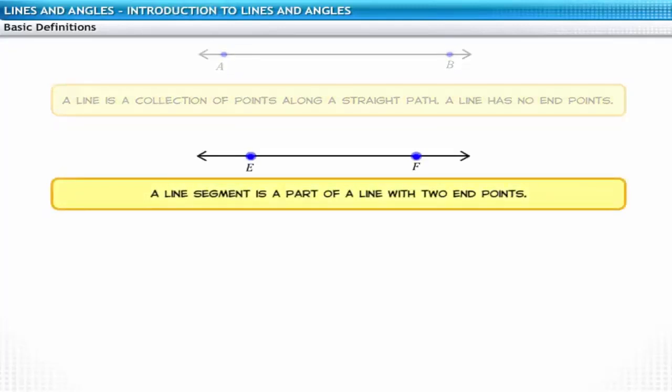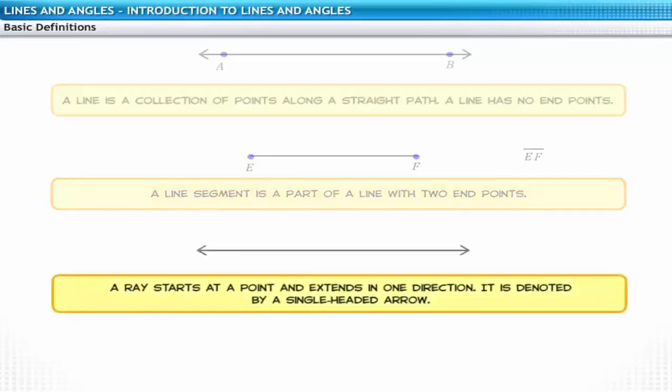A part of a line that has two endpoints is called a line segment. Let's name this line segment EF. It is denoted by a bar. And a part of line with one endpoint is called a ray. Let's name the ray PQ. It is denoted by a single headed arrow.